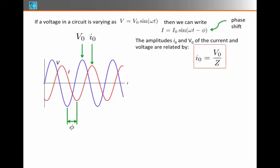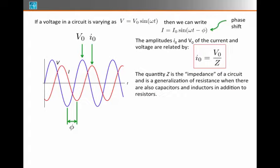In general, they're related by a constant of proportionality. I₀ equals V₀ divided by Z, where Z is called the impedance of the circuit. It's the general case of resistance, and it adds to the resistance the case of inductors and capacitors that might be present in an AC circuit.